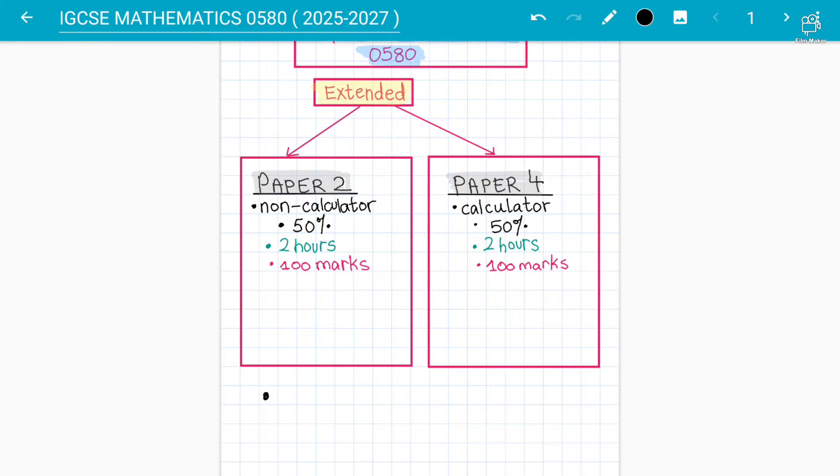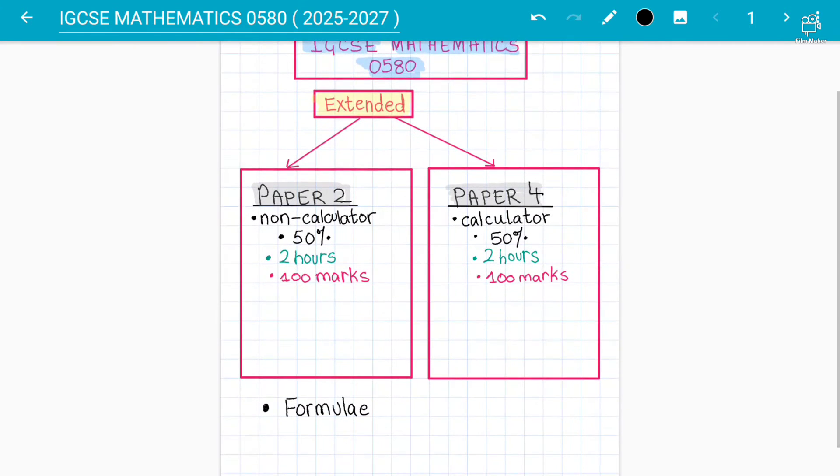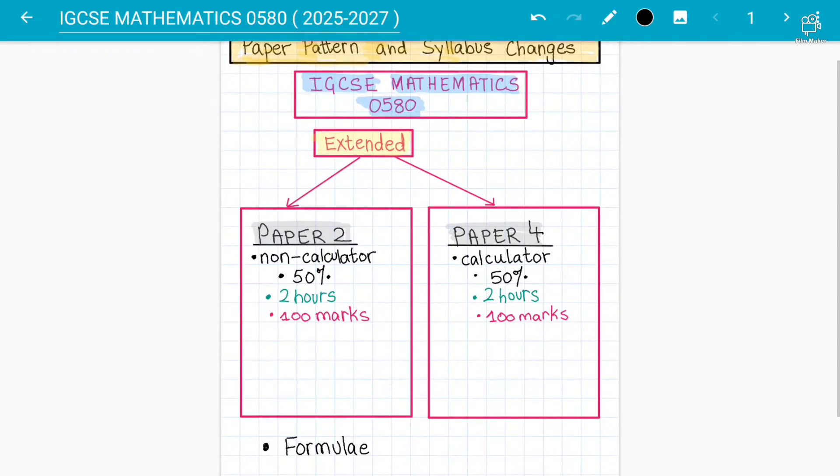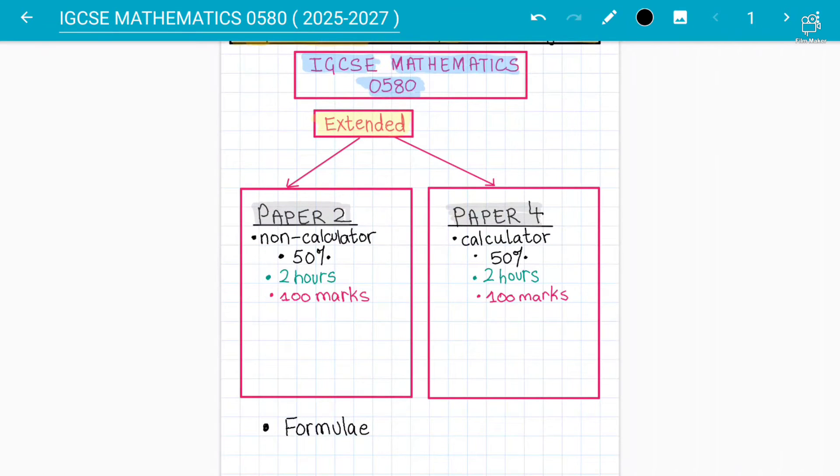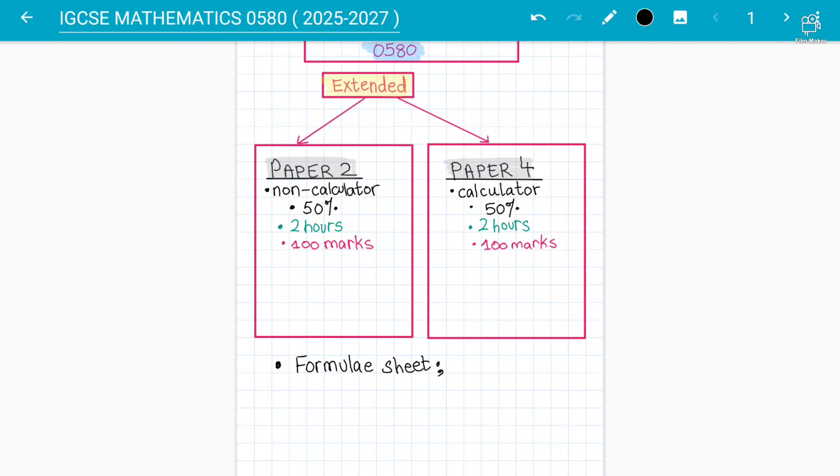The next important thing is basically now they are going to give you the formula sheet as well. Now students will have a formula sheet as well in both papers. I'll repeat we are talking about extended papers only for 0580. So make sure wherever you are from anywhere part of the world follow this video to understand the concept. The formula sheet will be given to you and the formula sheet is basically available on the Cambridge website as well.